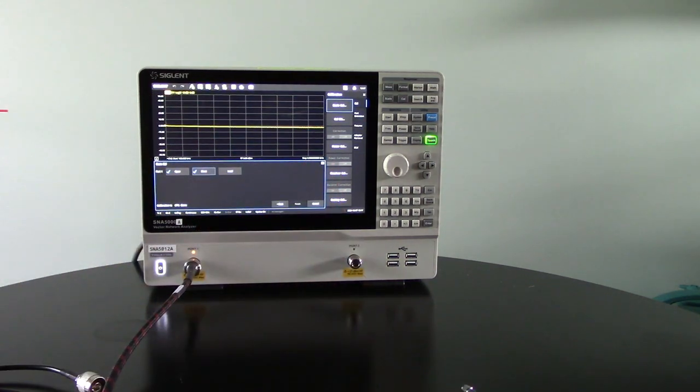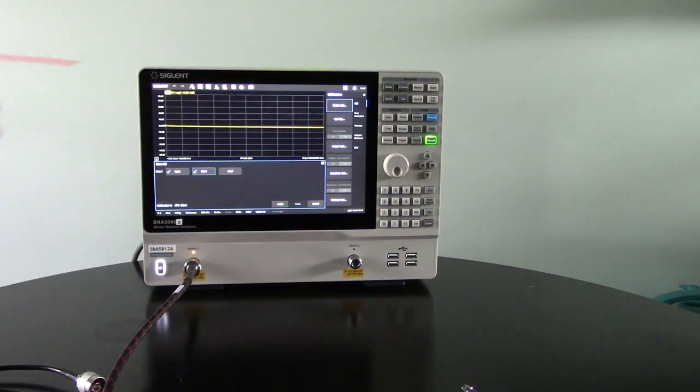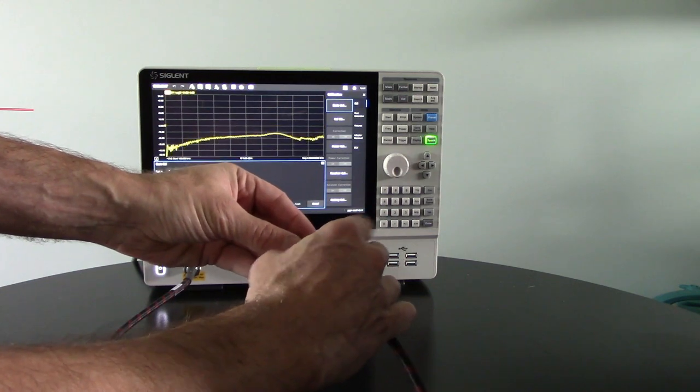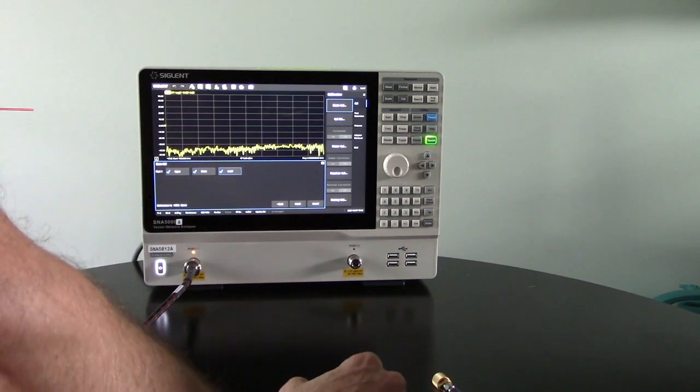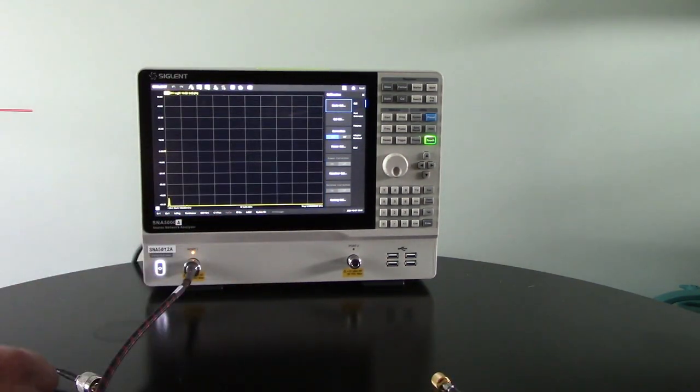Now we're going to remove that and replace it with the load. This is a 50 ohm load which matches the characteristic impedance of the vector network analyzer input. Again we're going to tighten the barrel and you'll see that S11 or the reflected value is going to change there. We're going to calibrate to that load. Once that's complete, we will accept the calibration state.